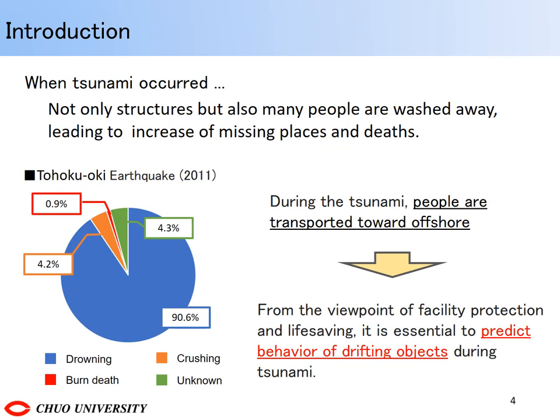The Tohoku-Oki earthquake, which occurred on March 11, 2011, showed a tremor of magnitude 9, one of the largest in Japan. The tsunami triggered by the earthquake resulted in tremendous flooding and debris from the collapse of houses, and secondly damage from drifting vehicles, containers, and ships. However, the tsunami's washed away is not limited to structures such as containers and ships, but includes many people, leading to an increase in missing people and death. From the viewpoint of facility protection and life-saving, it is essential to predict drifting objects' behavior and range when a tsunami strikes.